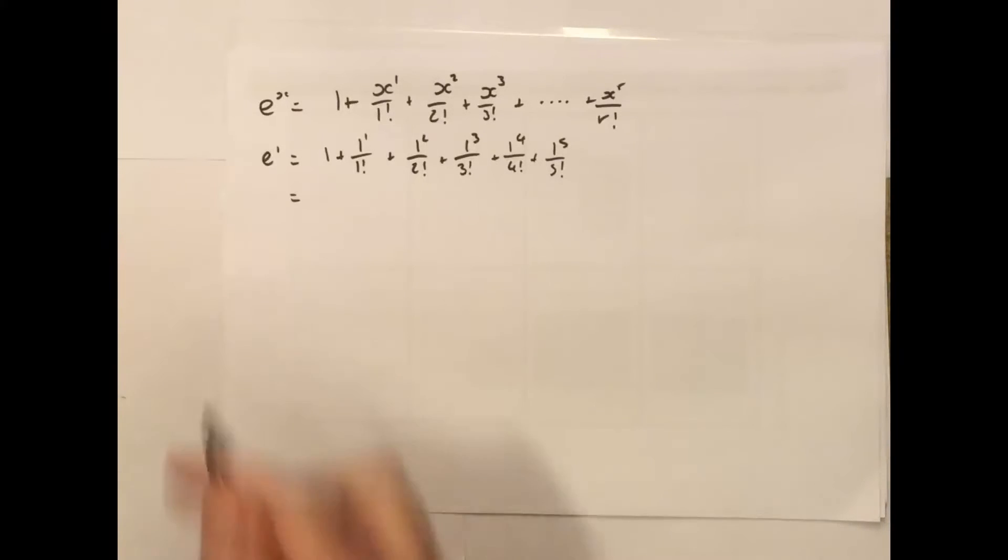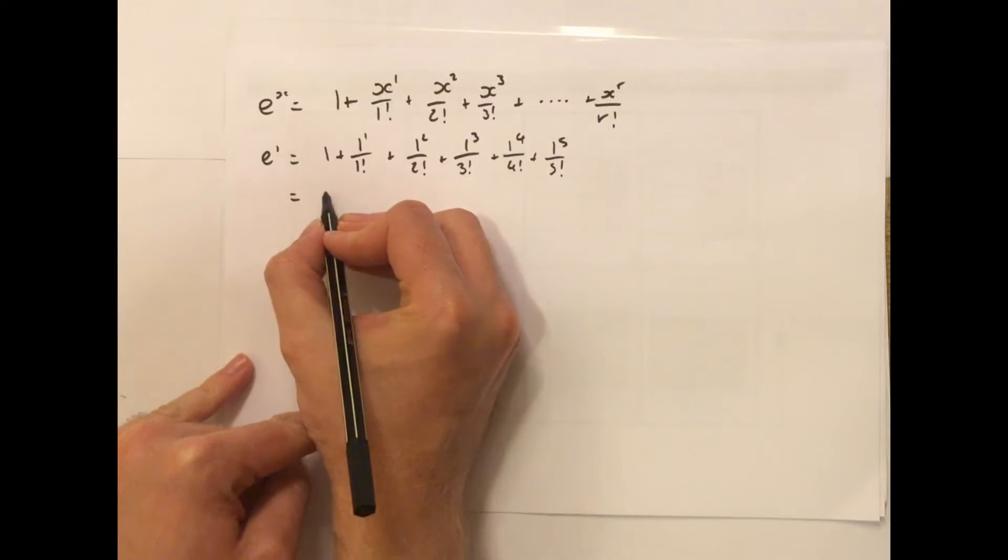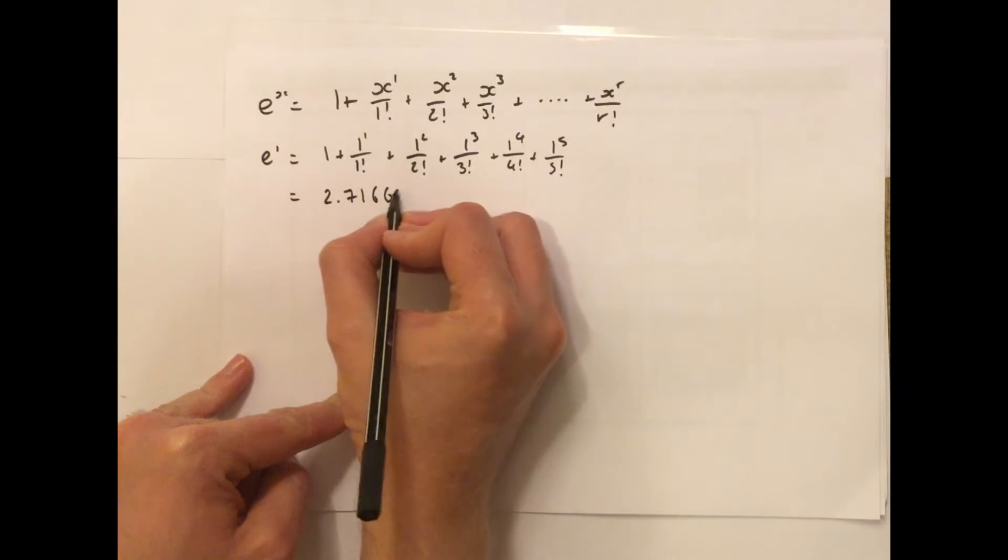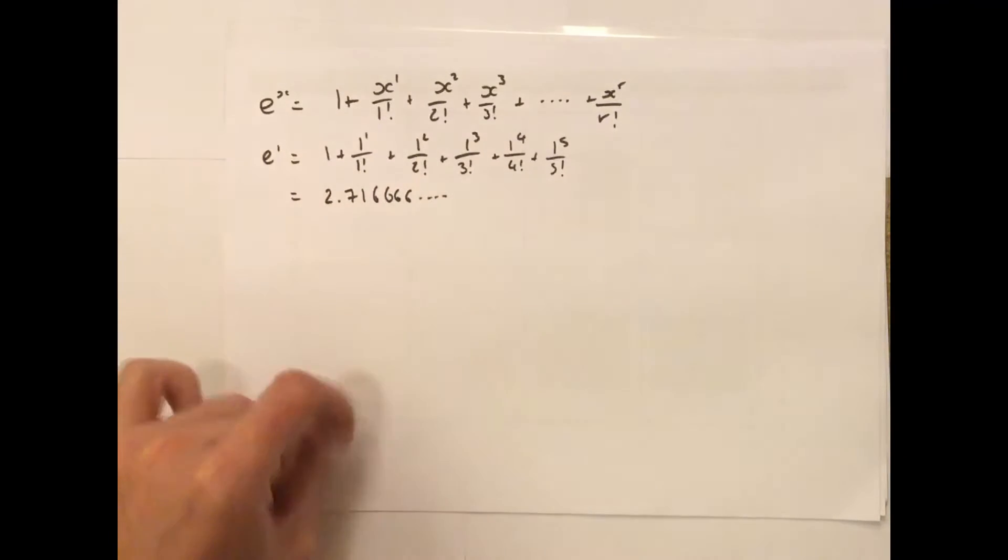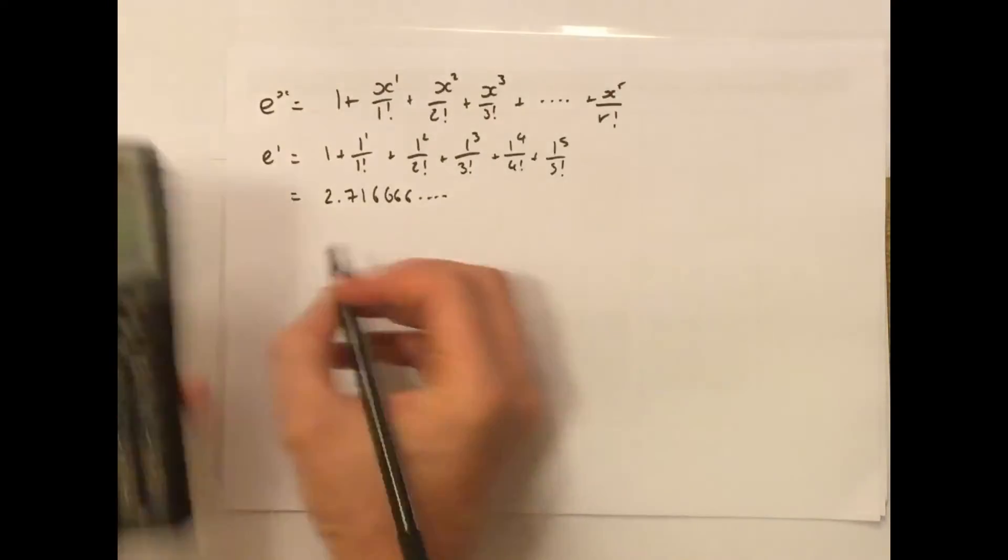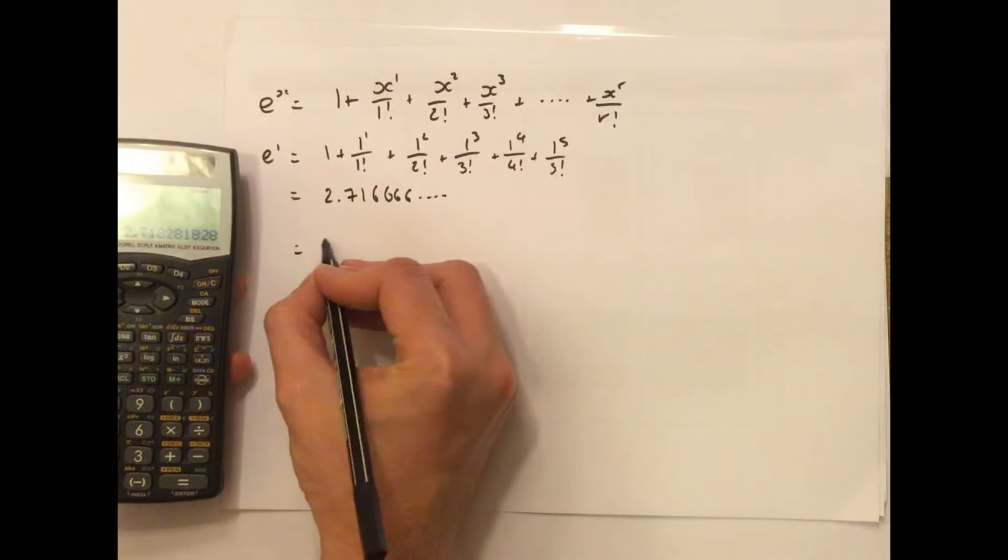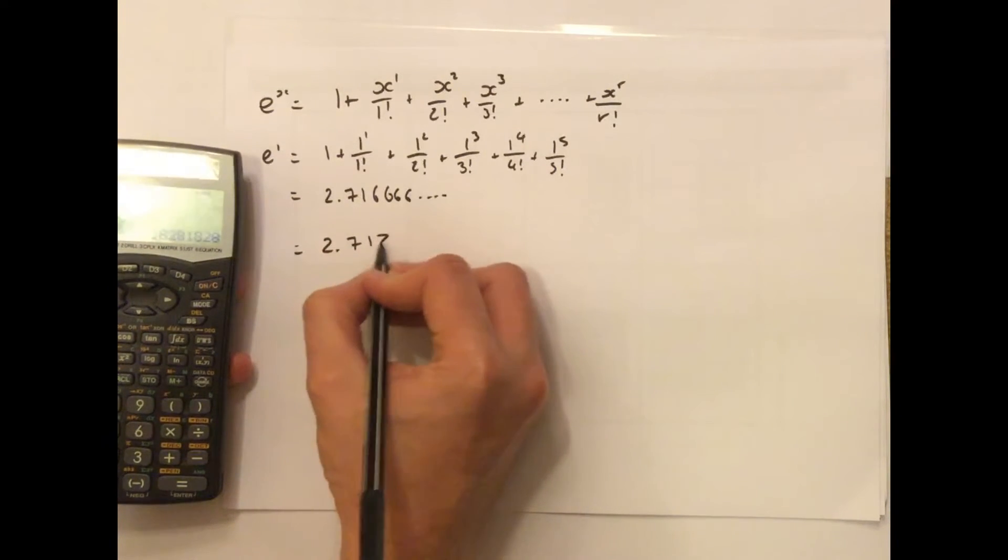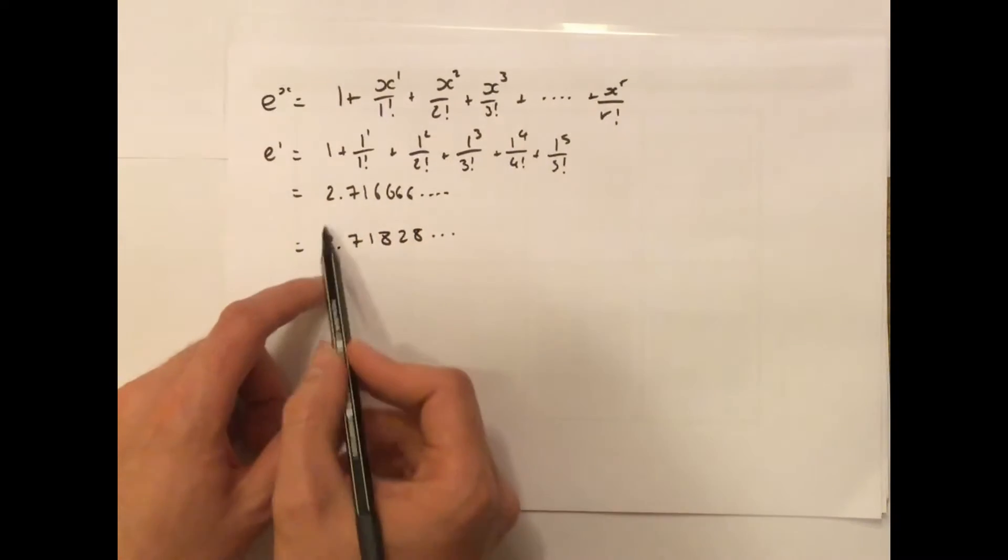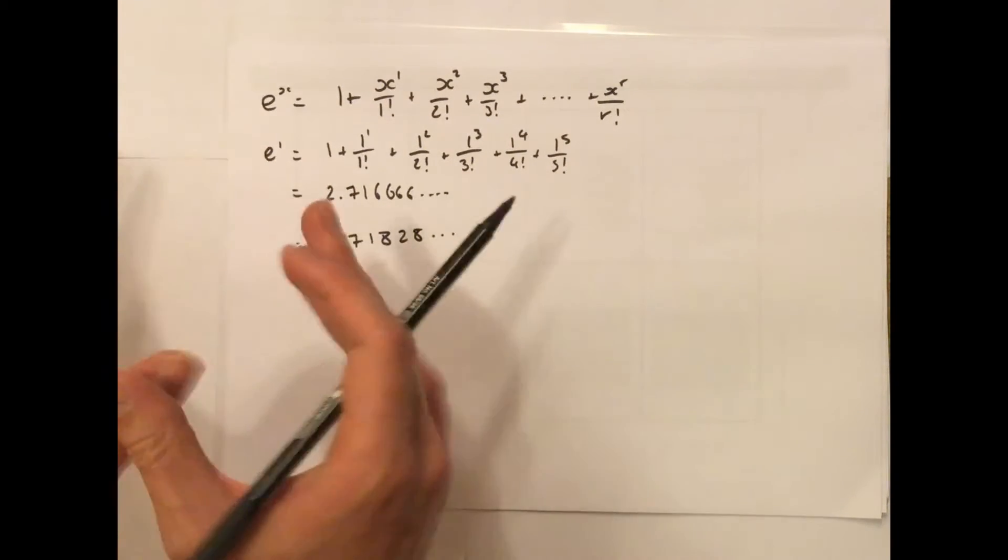Great, you should have found that this came to something like 2.716666 recurring. Now, on your calculator, try typing in e to the power of 1, and see what you get. So that comes out as 2.71828. And you can see the first three numbers nicely match up.